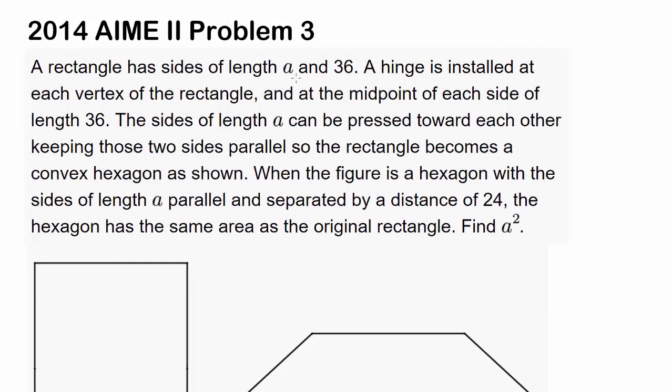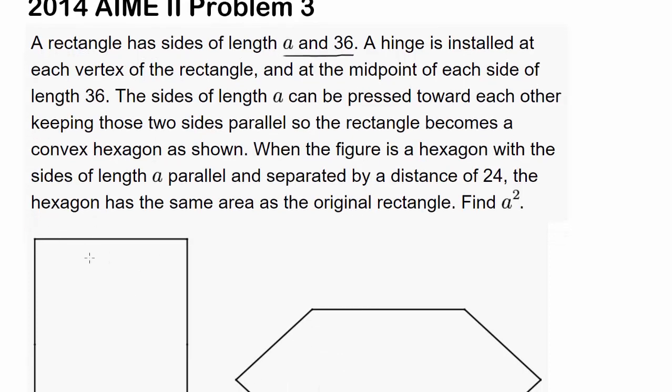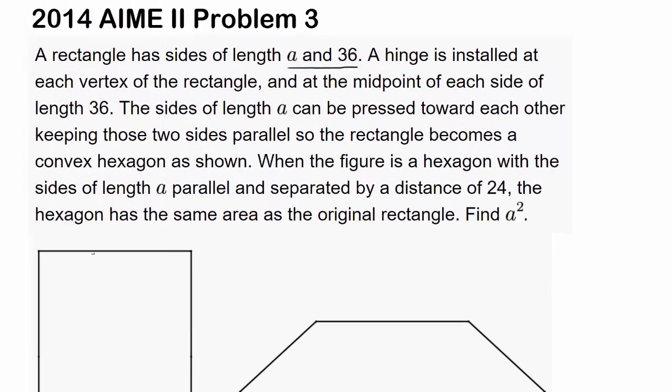A rectangle has sides of length A and 36. They are not specifying to us yet which one is A and which one is 36. Let's read on.